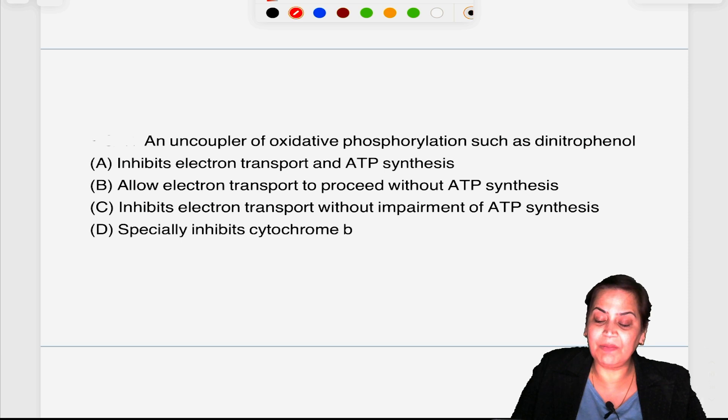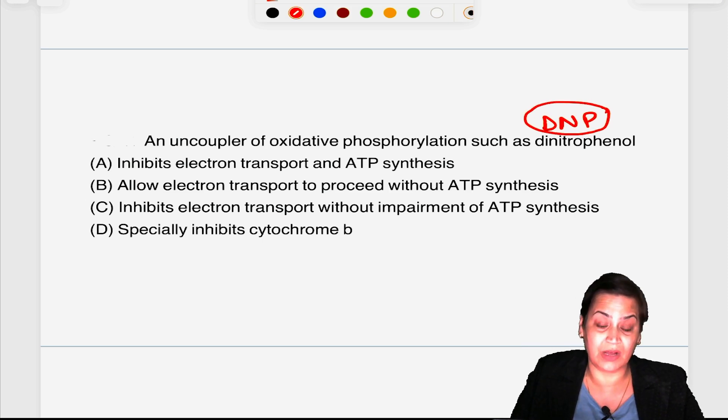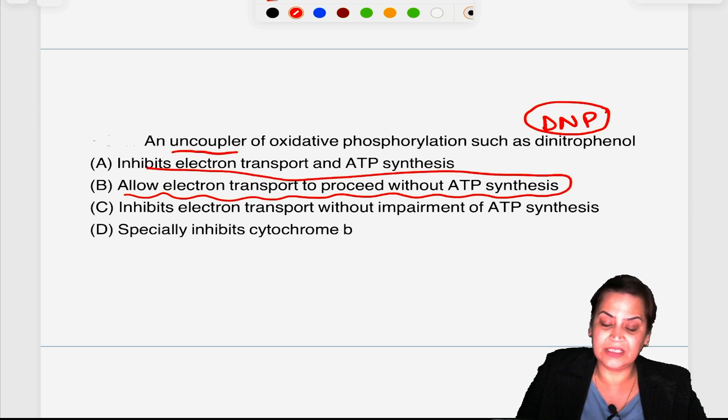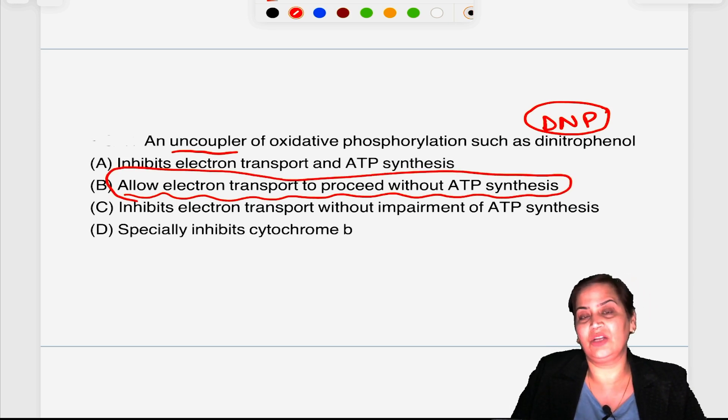An uncoupler of oxidative phosphorylation such as DNP. Always remember DNP was also considered to be a weight reducing drug. Why? Because electron transport chain is occurring, but whatever energy is required for the synthesis of ATP, it is dissipated in the form of heat. That is why it is an uncoupler. So the answer will be: it will allow electron transport to proceed without ATP synthesis because this is the function of an uncoupler.